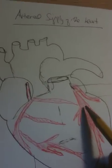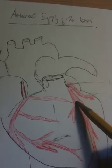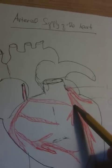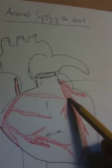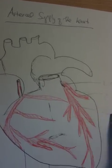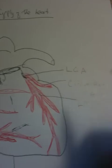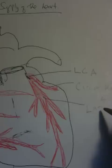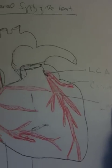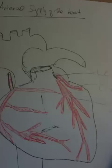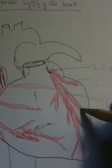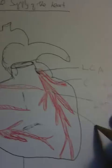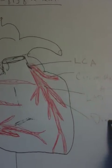This one over here, the main branch that comes down from the left coronary artery, is known as the Left Anterior Descending artery — the LAD. And the branch that comes down from that, this particular branch over here, is known as the diagonal artery.